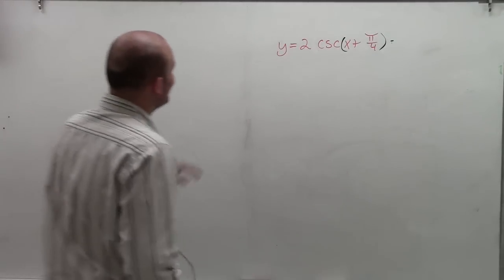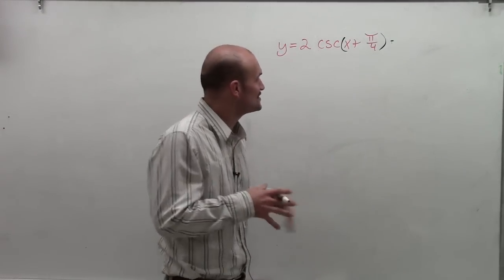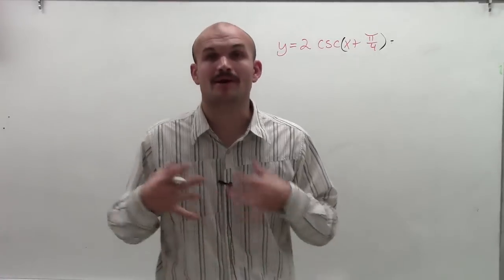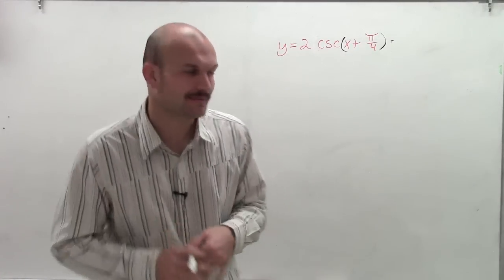Something like that. So here we go. I have y equals 2 times cosecant of x plus pi over 4, and what I want to do is I want to show you how to graph this problem.